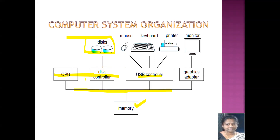The CPU and the device controllers can execute in parallel, competing for memory cycles. To ensure orderly access to shared memory, a memory controller synchronizes access to the shared memory. All these devices are connected through a common bus to the shared memory and can execute concurrently, so they must be able to access the shared memory. The memory controller synchronizes them so that these devices can access the memory in an orderly fashion.